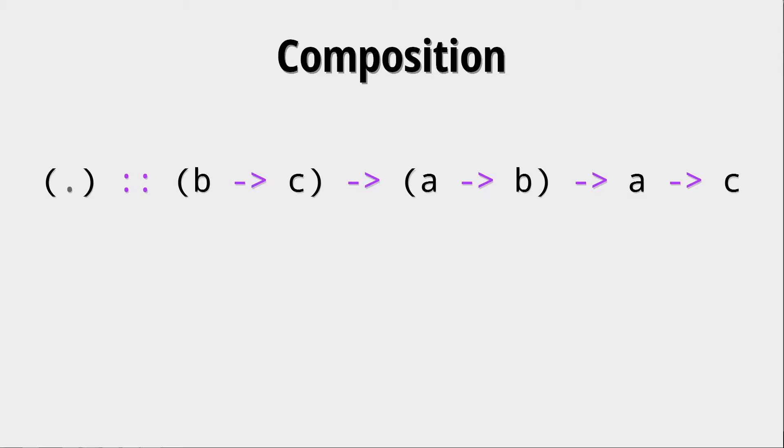This dot operator takes two functions as arguments and then a value and gives us back a value. So when we have a term like f dot g, it is equivalent to the anonymous function where we have some free variable x and then first apply g to it and after that apply f to it.